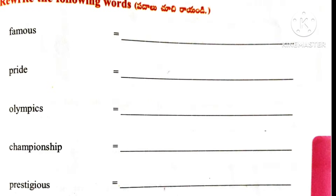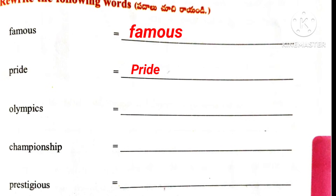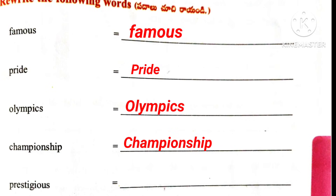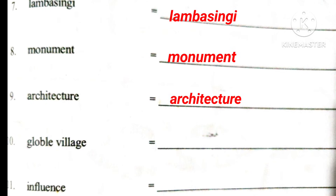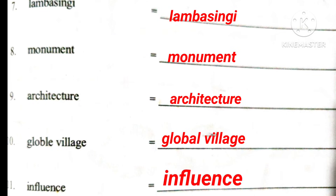Worksheet 5, Roman number 1. Rewrite the following words: Famous, Pride, Olympics, Championship, Prestigious, Tourist Place, Lambasinghi, Monument, Architecture, Global Village, and Influence.